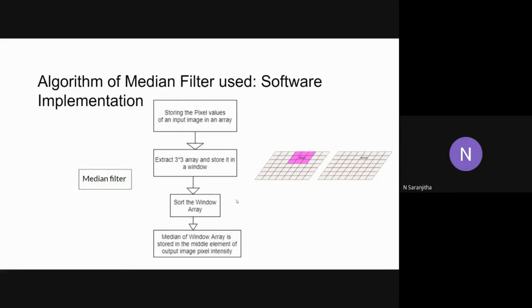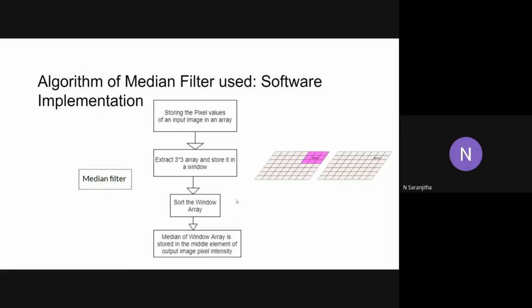Using the median filter, we try to replace these extreme values with intermediate values. We store the pixel values of the input image in an array, extract every 3x3 array from the input image, and store it into a window of the same dimension — 3x3. We then sort this window array, extract the median element, and replace the corresponding pixel in the destination matrix, thereby replacing the black and white dots with gray. This procedure is carried out for every 3x3 array by sliding the window vertically and horizontally.